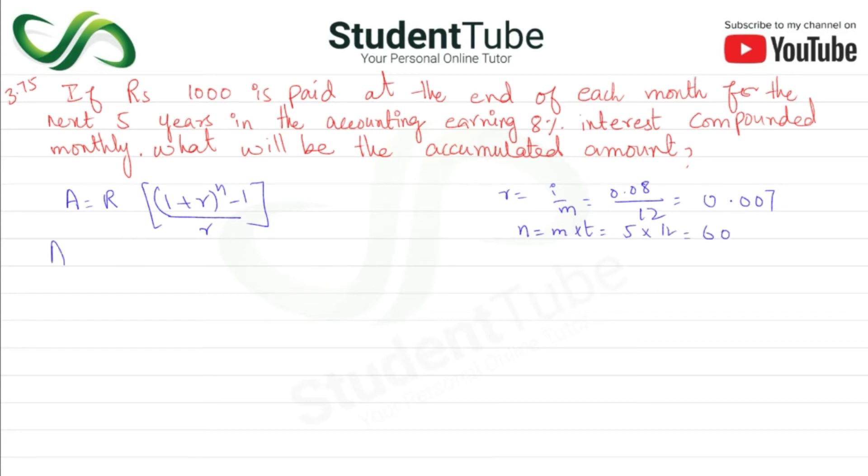So A is equal to R, which is 1000, times [1 plus small r which is 0.007, raised to the power 60 minus 1], and divide by 0.007.